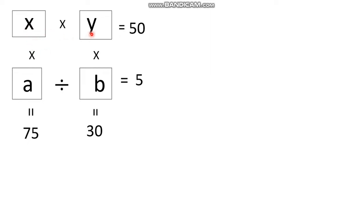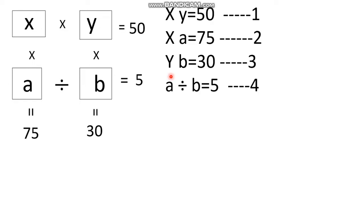All the question marks are replaced by X, Y, A, and B, and I am going to get four equations — one equation in each direction. The equations are: X times Y is equal to 50, X times A is equal to 75, Y times B is equal to 30, and A divided by B is equal to 5. I have labeled these equation 1, 2, 3, and 4.